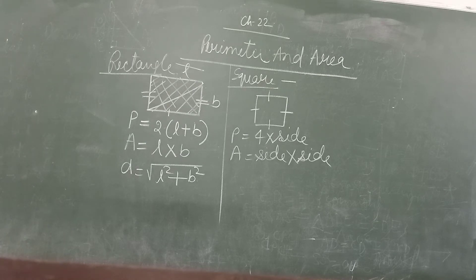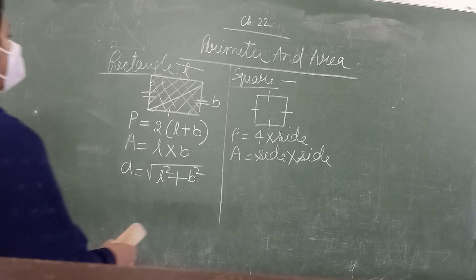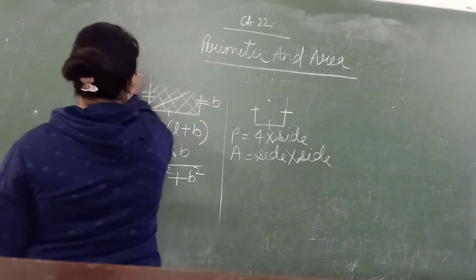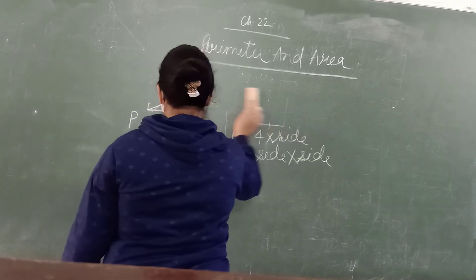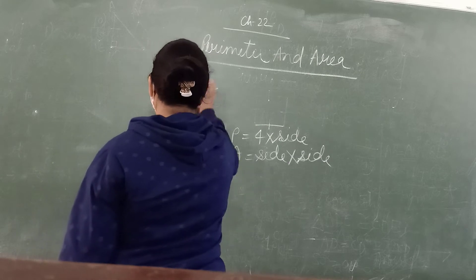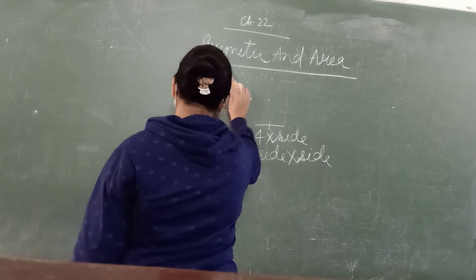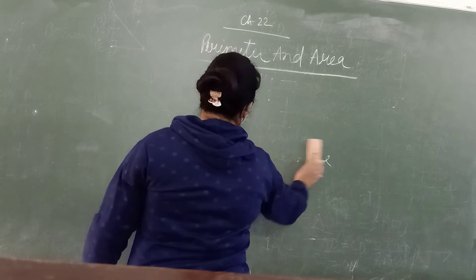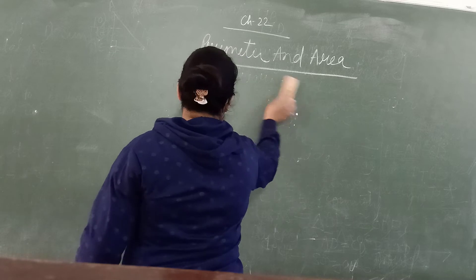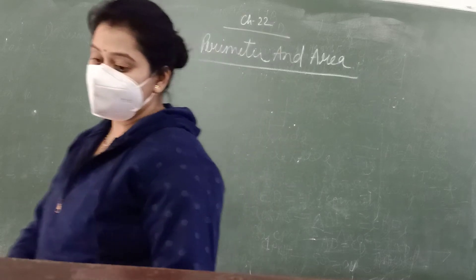Let's begin the exercise. Let's move to Exercise 22A. We have to take up to 10 questions only in this exercise because we have very less time to prepare for our unit test. So, up to 10 questions only, you have to solve in your copies.